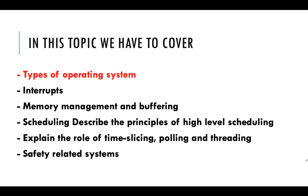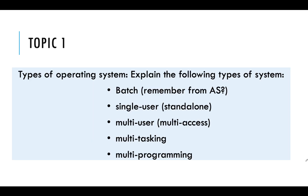There are a few things to cover before we get stuck into operating systems themselves. In the total chapter we have to talk about operating systems, the different types, interrupts, memory management and buffering, scheduling and high-level scheduling, what priority means in that, the role of time slicing, polling and threading, and safety related systems. So let's kick off looking at batch systems.